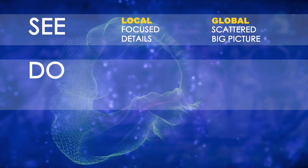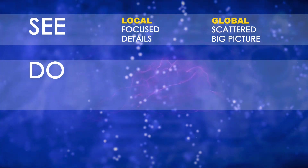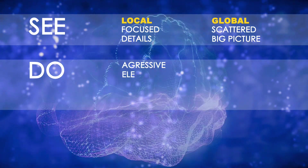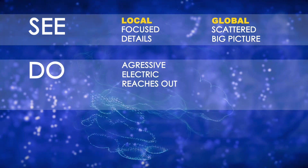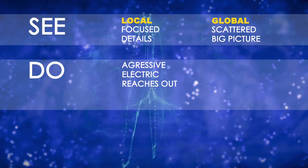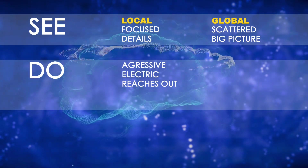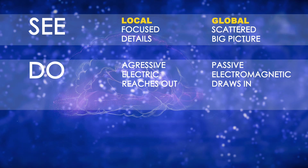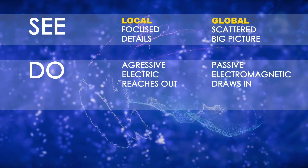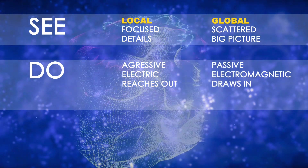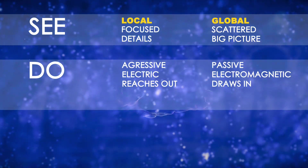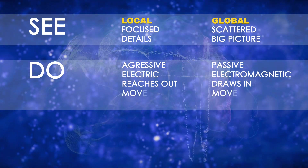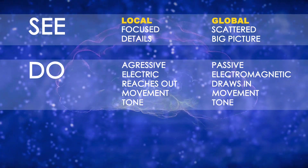The brain's division into complementary hemispheres also affects what we do. Among other things, it gives us two ways to connect. The local side of the brain is aggressive. To help us connect with people and things, it uses electric energies to reach out. The global side of the brain is passive. It connects through the use of electromagnetic energies, which it uses to draw in the people and things that interest us. Electromagnetic energies affect our movement and tone. Movement and tone often reveal gender.